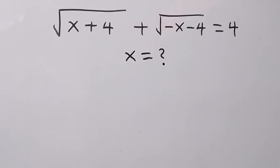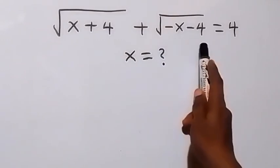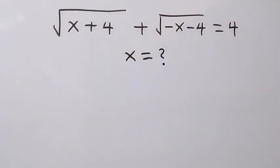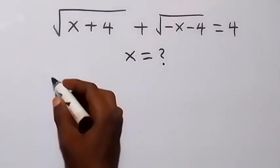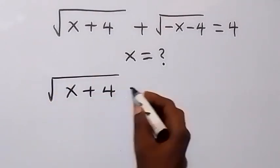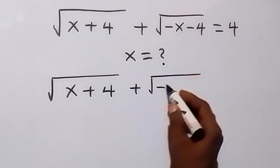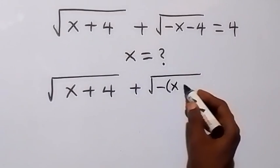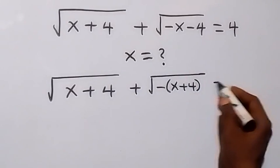Hello, you are welcome. How to solve this nice square root algebra problem: we have √(x+4) + √(-x-4) = 4. To find the value of x, we can rewrite it as √(x+4) + √(-(x+4)) = 4, factoring out the minus sign inside the second square root.